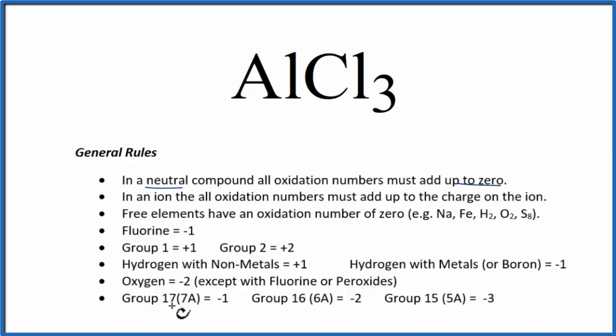So going down our list, we see that group 17, sometimes called 7A, oxidation number is going to be minus one. Chlorine is in group 17, so it has an oxidation number of minus one.